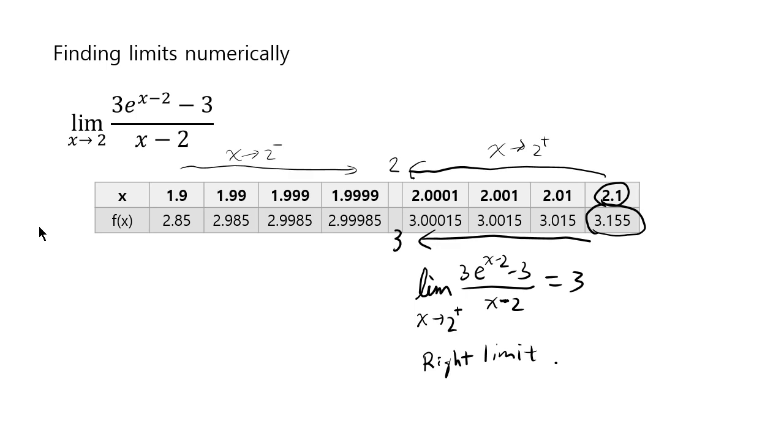Now again, you see that the value of the function is 2.85, 2.985, 2.9985, 2.99985. So had we put one more 9 in there, we're probably going to get more 9s, right? 2.99999. So it will get closer and closer to 3 as we put in more 9s.